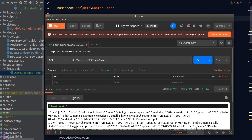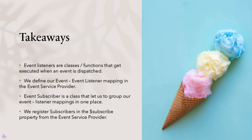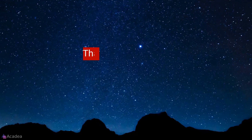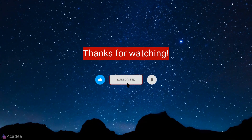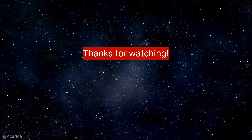We still need to create events for our Post and Comment models — I'll leave that as an exercise for you, and the solution will be provided in the project repository. In the next video we'll learn how to actually send an email to the user inside the event listener. Key takeaways for this lesson: event listeners are classes or functions that get executed when an event is dispatched; we define our event-to-listener mapping in the EventServiceProvider; an event subscriber is a class that lets us group our event-to-listener mappings in one place; and we register subscribers in the subscribe property of the EventServiceProvider.